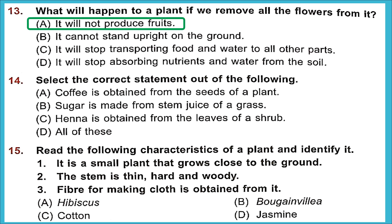Question 14: Select the correct statement. Coffee is obtained from the seeds of a plant — correct. Sugar is made from the stem juice of a grass — correct (sugarcane). Heena is obtained from the leaves of a shrub — also correct. So everything is right and option D — all of these — is the right answer.